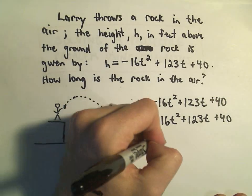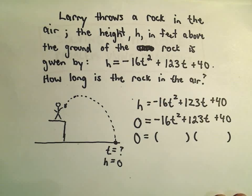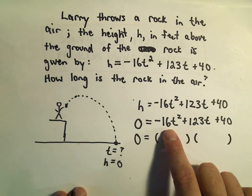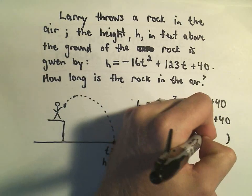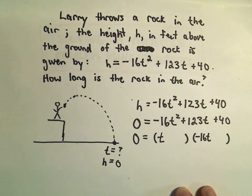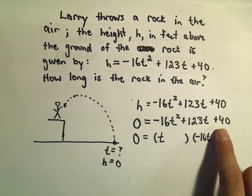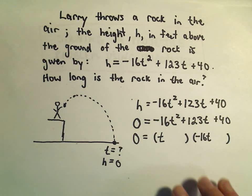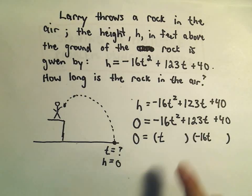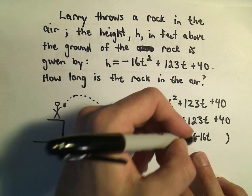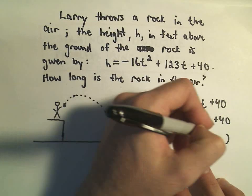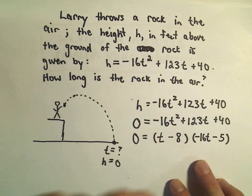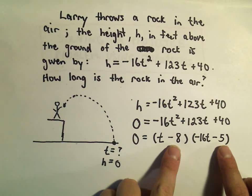We need something to give us negative 16t squared. I'm going to try a t and a negative 16t. We need two numbers to multiply to 40. But again, when we distribute everything out, we have to get this 123t. Let's see. I think we can use negative 8 and negative 5. So if we multiply those, we definitely get positive 40.